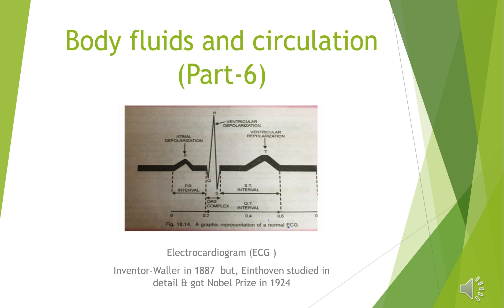The T wave is dome-shaped and represents ventricular repolarization, meaning the ventricles are in a relaxation state. The potential generated by the recovery of the ventricle from the depolarized state is called the repolarization wave. The end of the T wave marks the end of systole. By counting the number of QRS complexes in a given time period, one can determine the heartbeat rate. Any deviation from the normal ECG shape indicates a possible abnormality or disease, hence it is of great clinical significance.